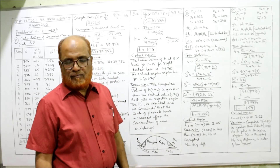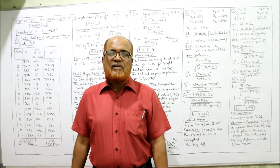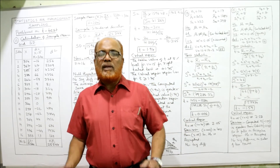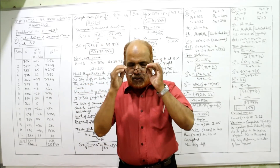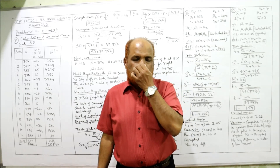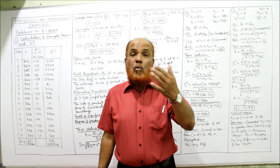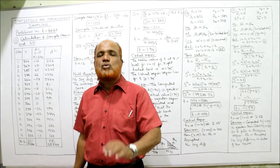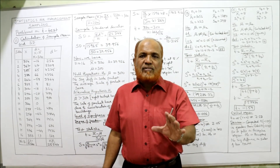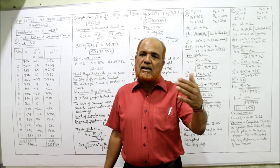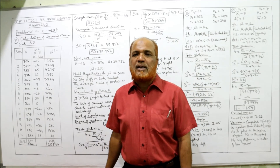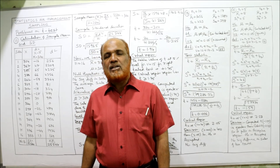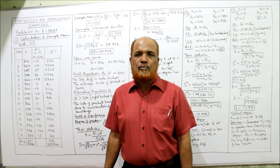Totally 15 problems we have done; the left-out problems will be done in the next video, which will be the last video on t-test. Comparatively, there are more problems in t-test compared to z-test, chi-square test, or ANOVA. After completing t-test, I will start the next topic — chi-square test or ANOVA. We will continue in the next video.